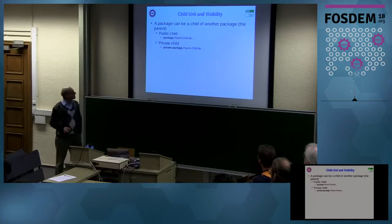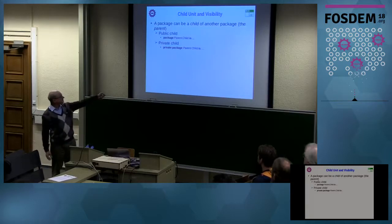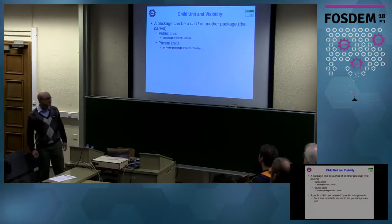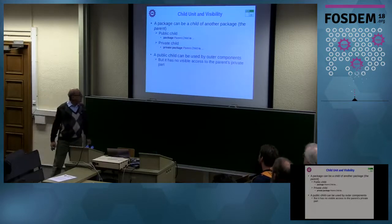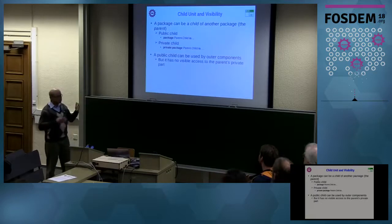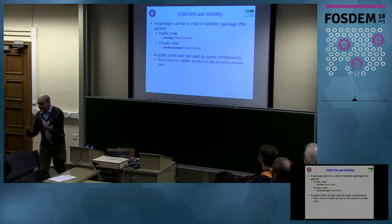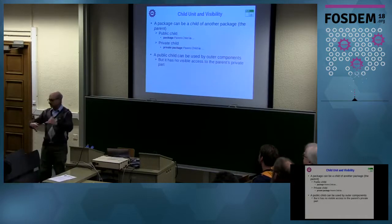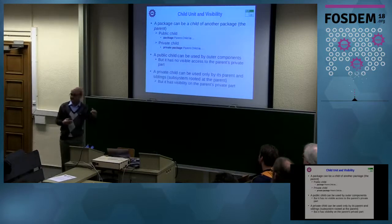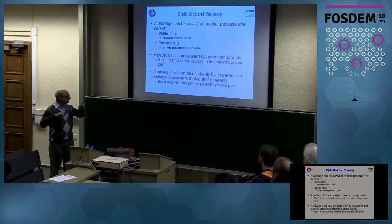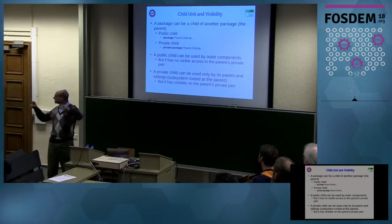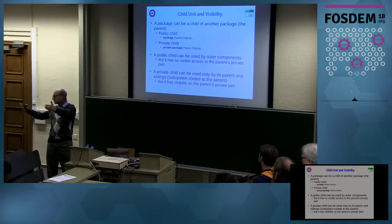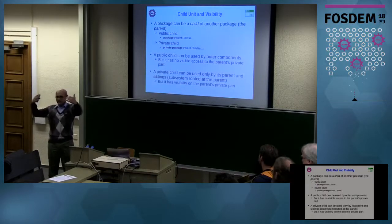There are two kinds of child units. A public child starts with a package name of the form Parent.Child, and if you add the word 'private' that makes it a private child. A public child is public — it can be used by outer components but cannot access the private part of its parent. A private child can be used only by its parent and siblings — it's a closed set, only the same family can use it. Outside the parent subsystem, you cannot use a private child.